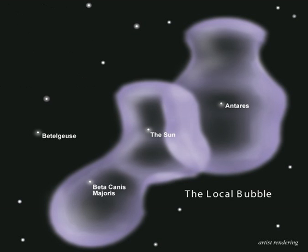The local bubble is not spherical, but seems to be narrower in the galactic plane, becoming somewhat egg-shaped or elliptical, and may widen above and below the galactic plane, becoming shaped like an hourglass. It abuts other bubbles of less dense interstellar medium, including, in particular, the loop-I bubble.